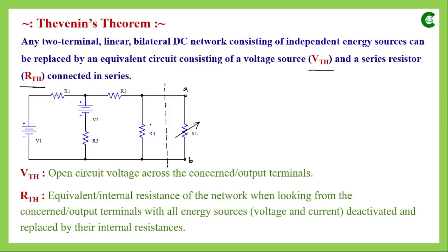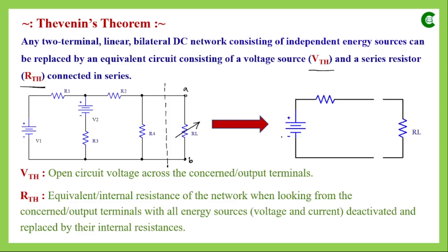How to find VTH — the open circuit voltage across the output terminals — and how to find RTH when looking from the concerned terminals will be understood better with an example. After applying the theorem, the final equivalent circuit has VTH and RTH connected in series, and RL connected between the two terminals AB is also connected with RTH and VTH in series. This is the final equivalent circuit after applying Thevenin's theorem.